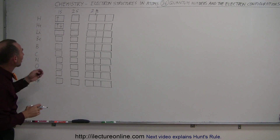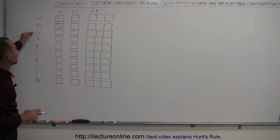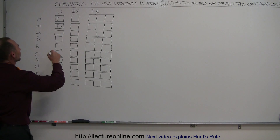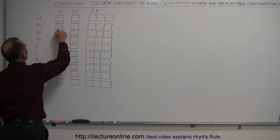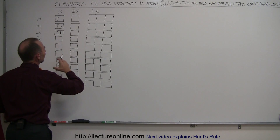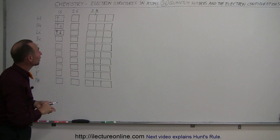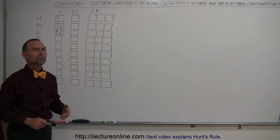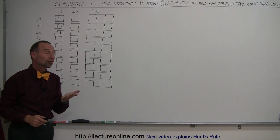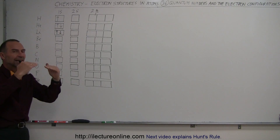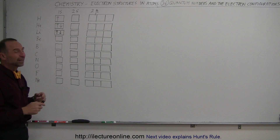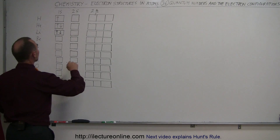Now we go to the next energy level for lithium. Lithium has three electrons, so the first two electrons fill up the first orbital on the first energy level, and then the next electron has to be in the second energy level. Which orbital will it go into — an S orbital or a P orbital? It turns out the S orbitals are at a slightly lower energy level than the three P orbitals, so the S orbital gets filled first in the second energy level.